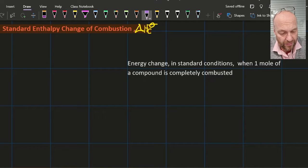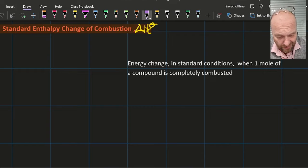The energy change in standard conditions when one mole of a compound is completely combusted. So complete combustion is going to give you carbon dioxide and water for pretty much any organic chemical made of carbon, hydrogen, oxygen. The IB favorite—well, first of all, make sure there's one of them, whatever it is. Make sure there's only one of them.